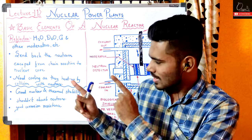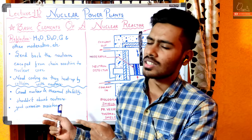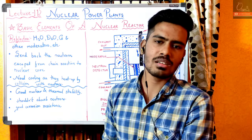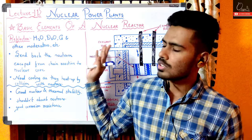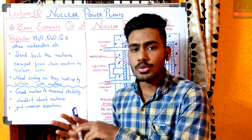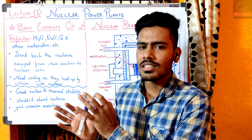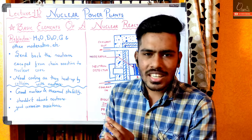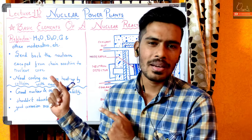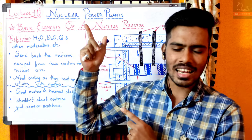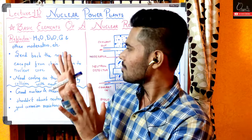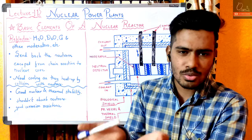Reflector के लिए हम material कौन से use करते हैं - hydrogen oxide, deuterium oxide, carbon। In short, moderator के जो material थे उन्हें ही use करते हैं। Reflector का क्या है - basically जो chain reaction के high speed के neutrons भाग जाते हैं core में से, उनको फिर से core में भेजना है।